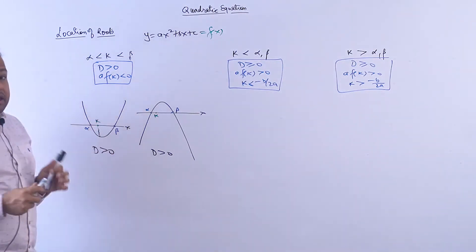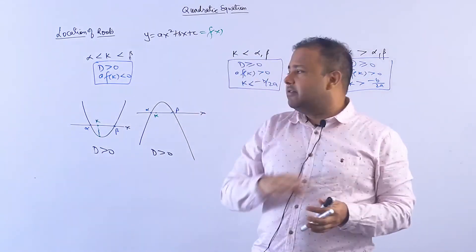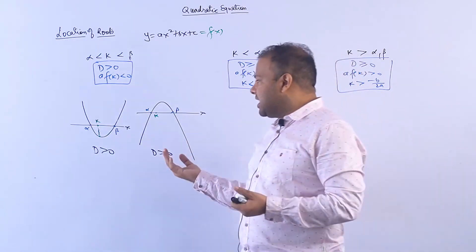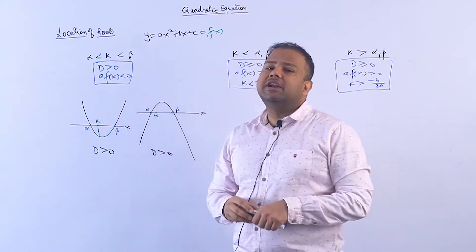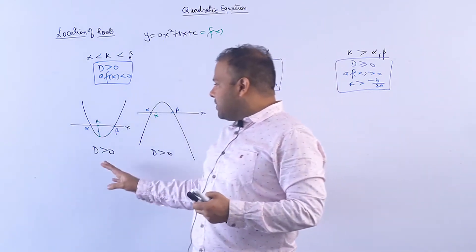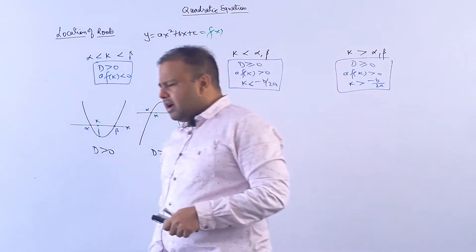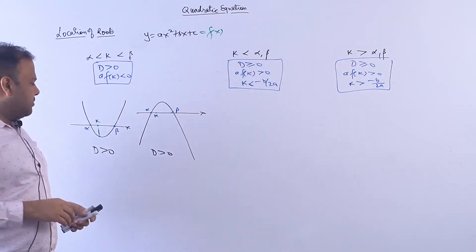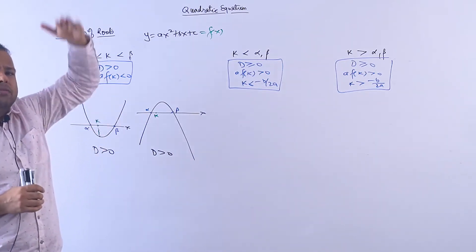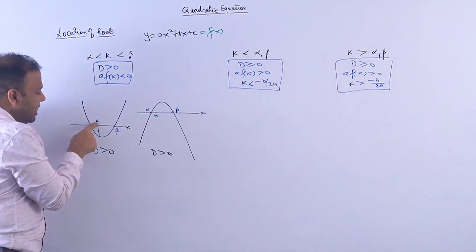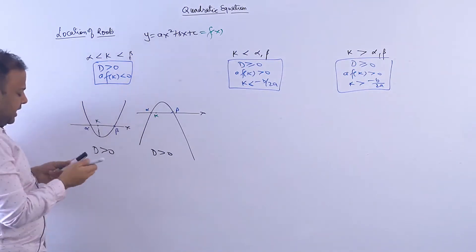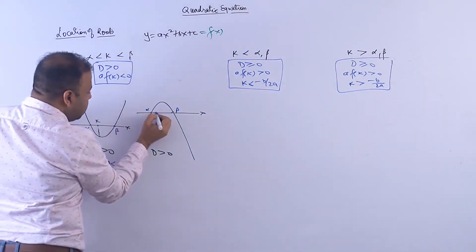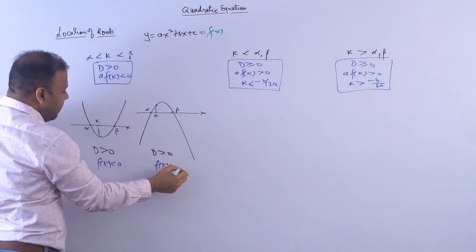So now tell me one thing: at k, is the function value positive or negative? This is basically understanding the graph. How much of the graph do you understand — everything depends on that. If you understand the graph, you'll be able to tell whether f(k) is positive or negative. It is usually a bit tricky at the start of Class 11.